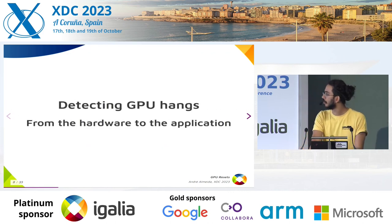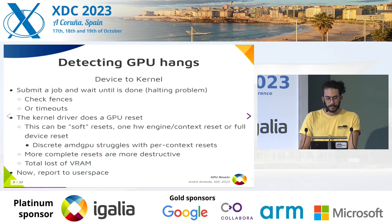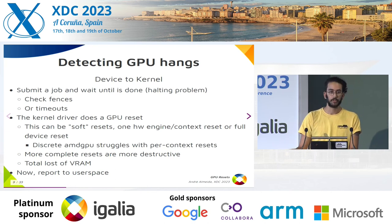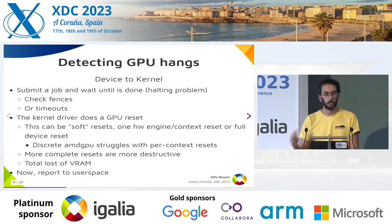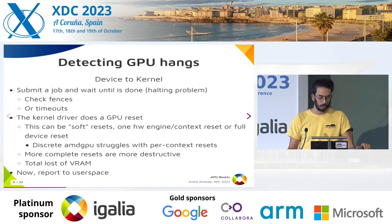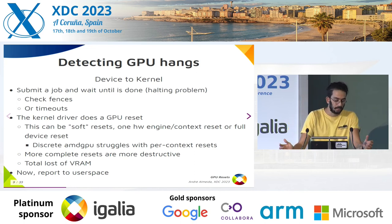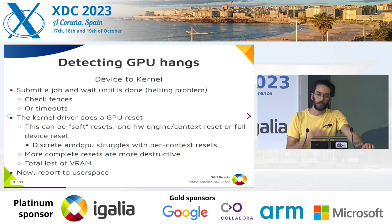Now let's look at what happens when a GPU hangs, from the hardware to the application. Mesa asks the kernel to submit a job to the driver, to the hardware. The kernel driver submits a job to the hardware. But as I said, shaders are Turing-complete, so we can't really decide if a given program will ever stop running. We need to check fences to see if the program is making progress, or use timeouts. If something takes too long to run, we believe it's in an infinite loop, so we decide the GPU has hung and try to kill it. Then the kernel driver needs to do a soft reset so we can step out of this hang state.